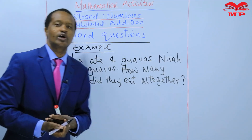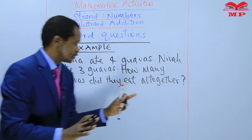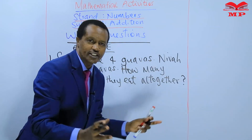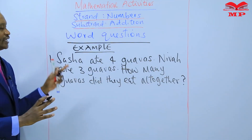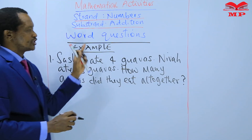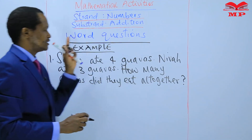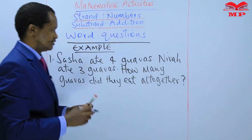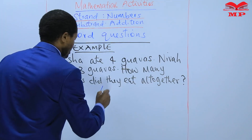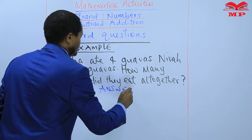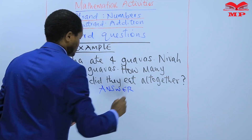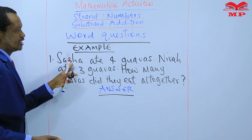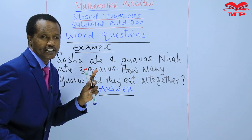We want to add — we want to put together. The question is how many guavas did they eat all together? That means we want to add the number of guavas that Sasha ate and the number of guavas that Neva ate.